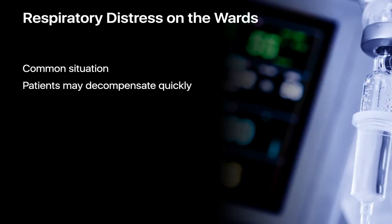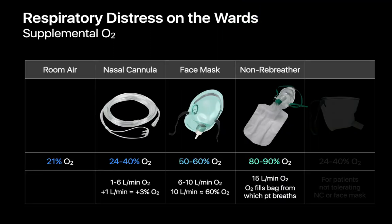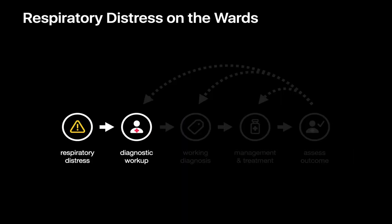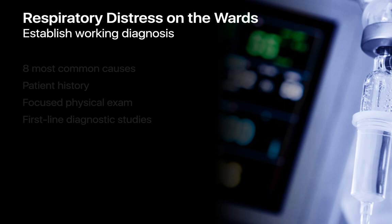Respiratory distress is a common situation on the wards requiring prompt attention since patients can decompensate quickly. The basic strategy is to establish a working diagnosis as promptly as possible and ensure the patient is getting enough oxygen while figuring things out. Supplemental oxygen can be delivered by nasal cannula, face mask, or non-rebreather depending on how much is needed. In patients who can't tolerate those, a face tent might be used. Once hypoxemia is temporarily staved off, the diagnostic workup begins, targeting one of eight most common causes.